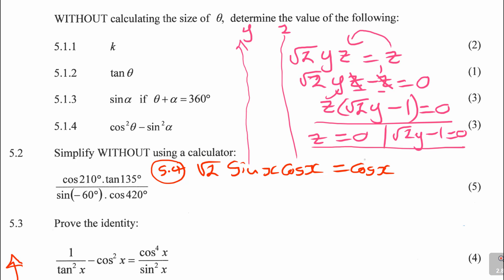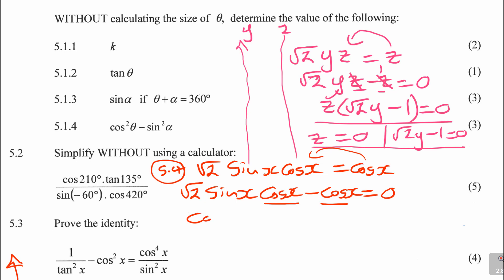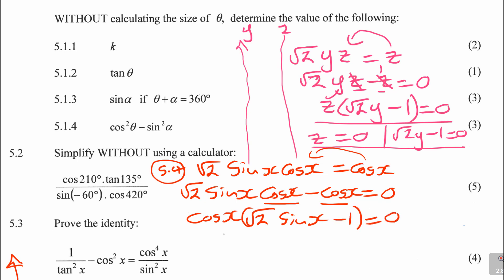So take cos x to the other side: square root of 2 sine x cos x minus cos x equals 0. Cos is common — take it out: cos x times (root 2 sine x minus 1) equals 0. Then it means either cos x is equal to 0, or square root of 2 sine x minus 1 is equal to 0.